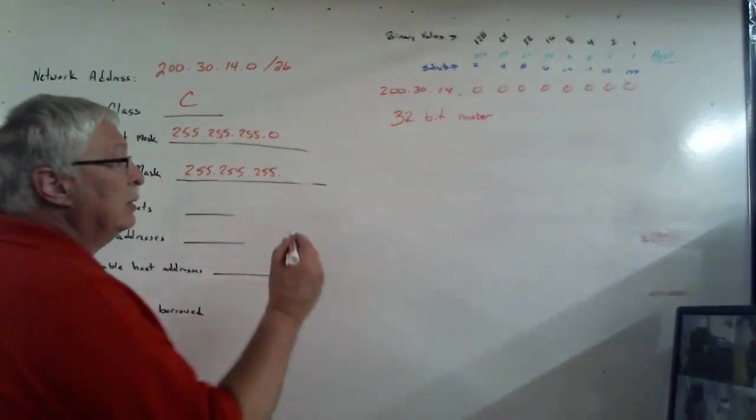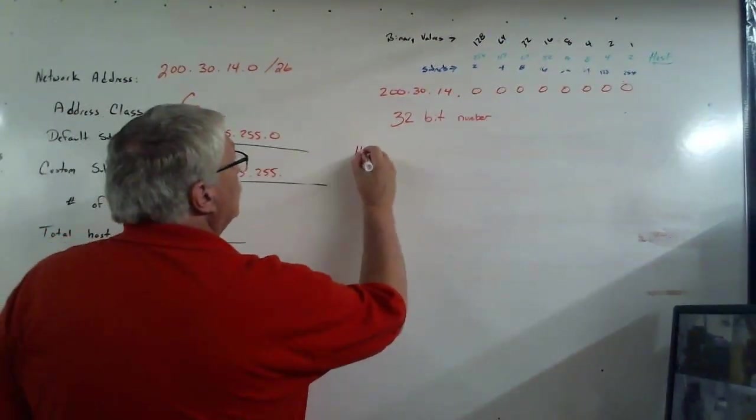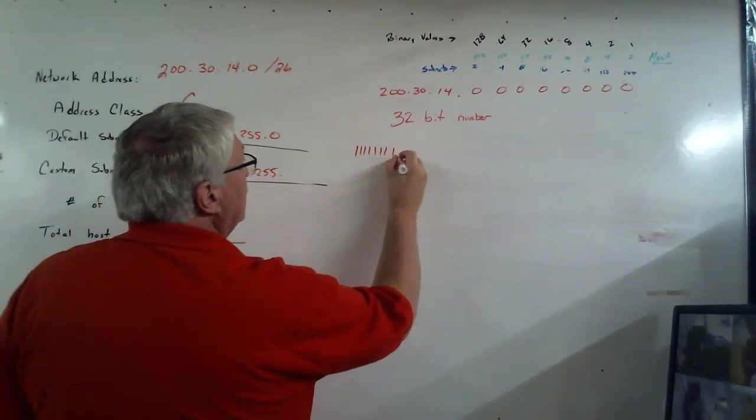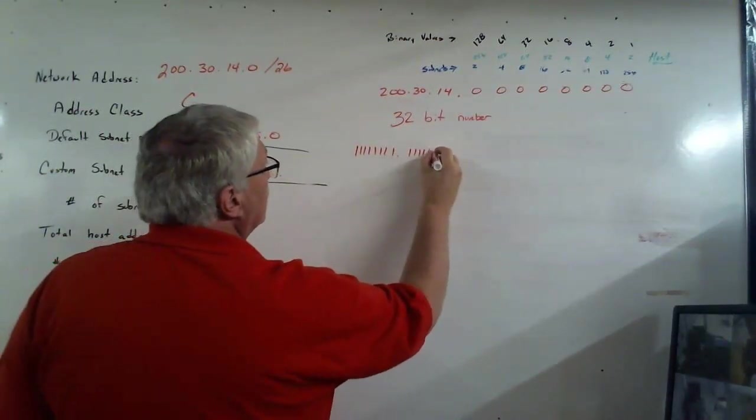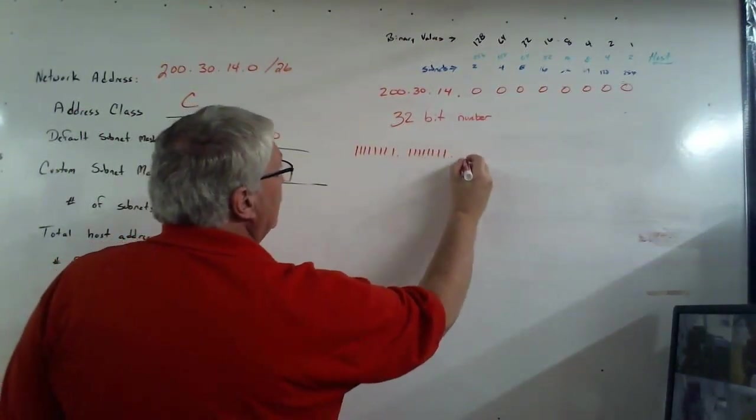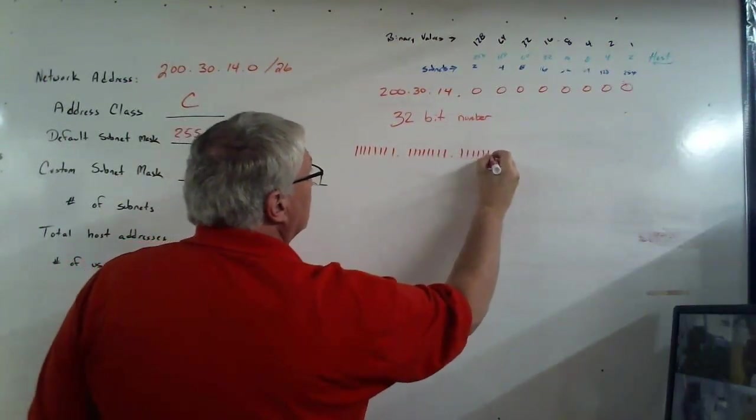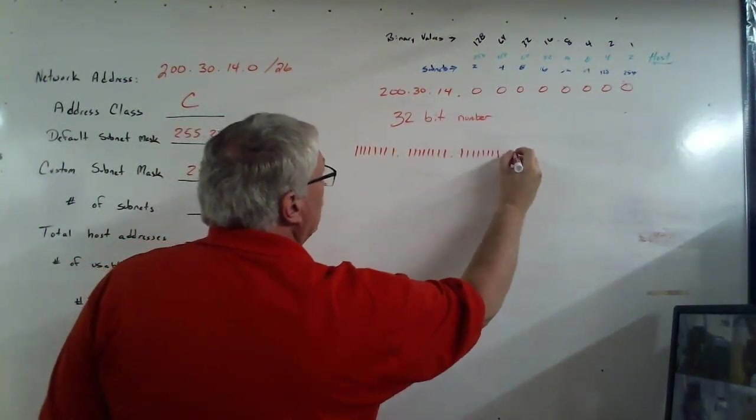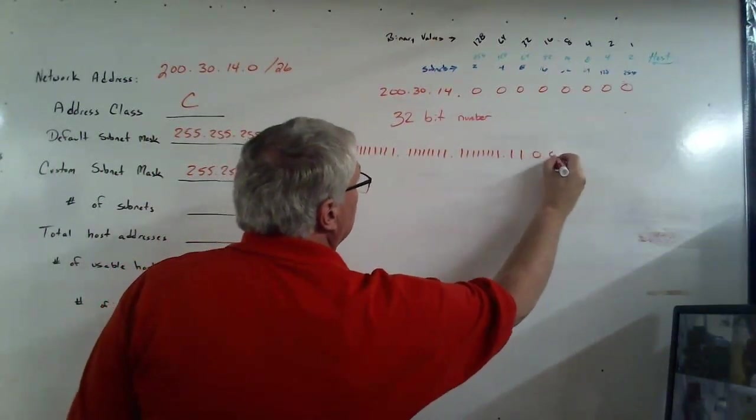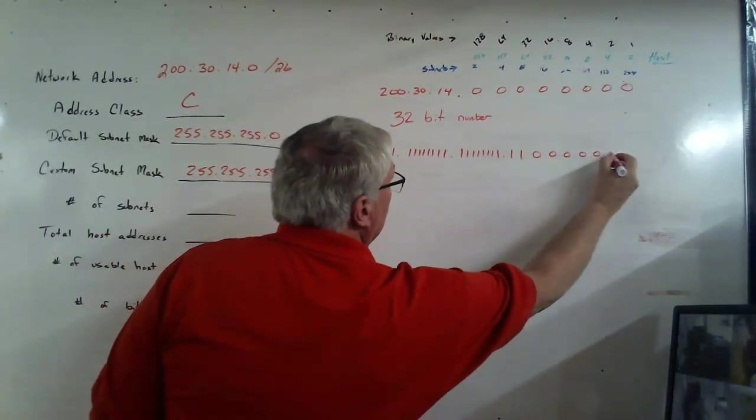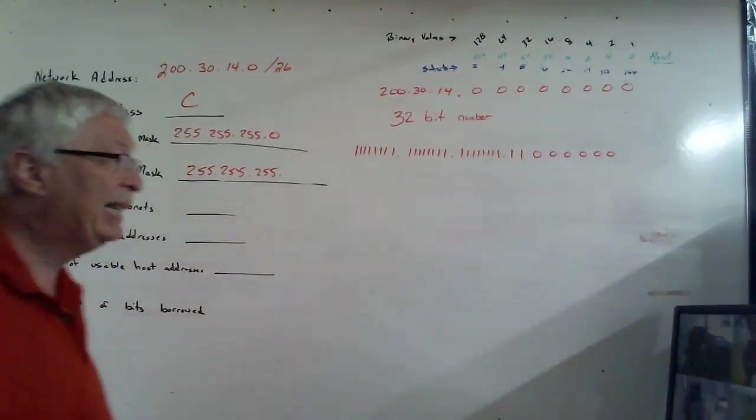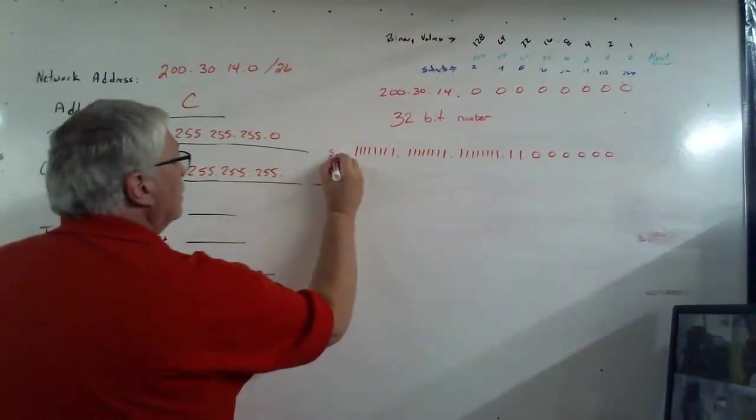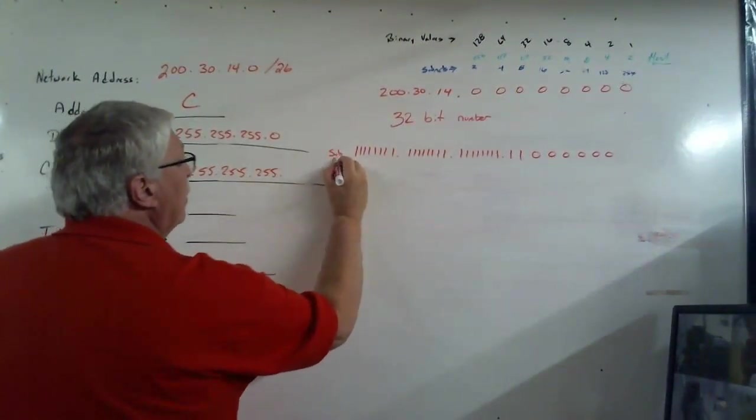That being said, the network portion is 26 in this example. So, that means I'm going to have 26 ones and everything else is going to be zeros. So, if I lay that out, and I have 1, 2, 3, 4, 5, 6, 7, 8, 1, 2, 3, 4, 5, 6, 7, 16, 1, 2, 3, 4, 5, 6, 7, 24, 25, 26, 27, 28, 29, 30, 31, 32. This is the subnet mask.